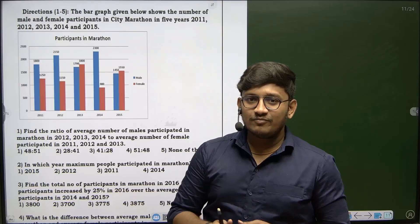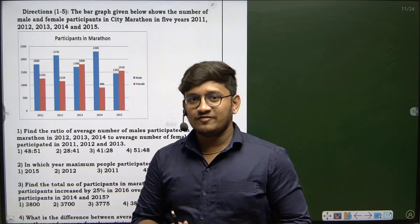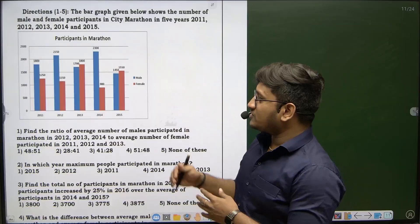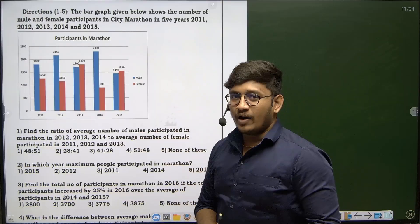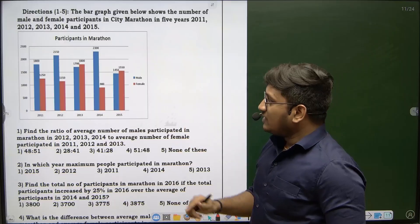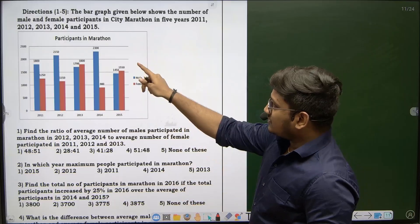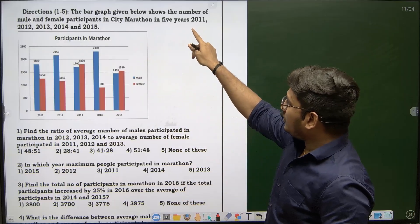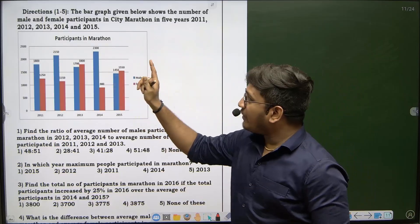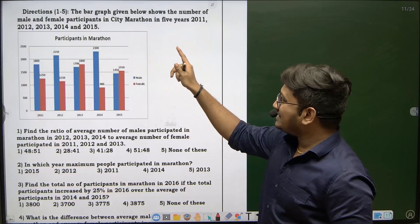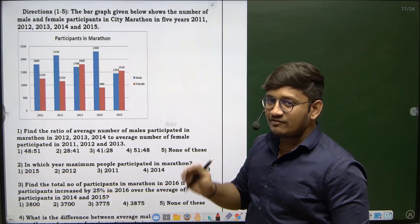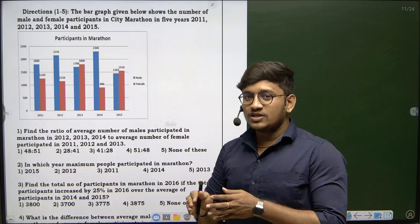Hi everyone, welcome back to the series of data interpretation part 3. Today we are going to discuss about bar graph. The bar graph given below shows the number of male and female participants in the city marathon over 5 years from 2011 to 2015.